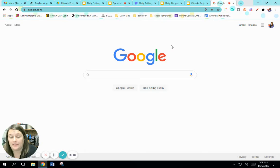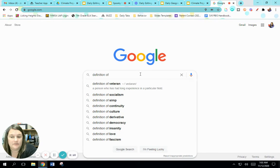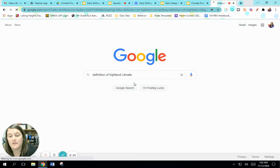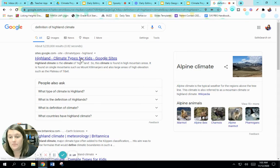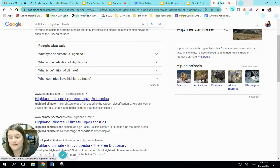As for the research, there's this little website you may not have heard of before—it's called Google. So what you're going to do here is you can just put in 'definition of Highland climate.' You can look for these, and there's different websites that you can find that will give you a definition.